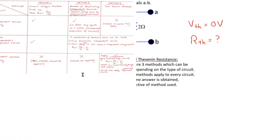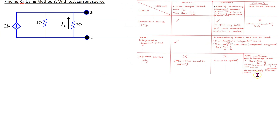When a given circuit has dependent sources only, then we only have one method — the test source method — to find the Thevenin equivalent resistance. This method calls for a test source to be applied to the terminals of interest, and then we find the ratio of the test voltage and the test current.